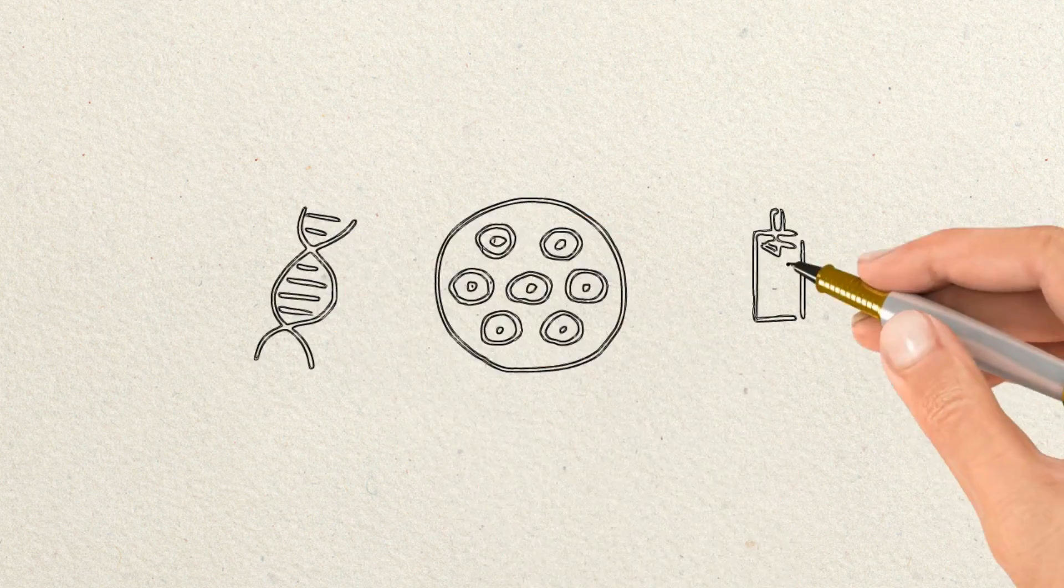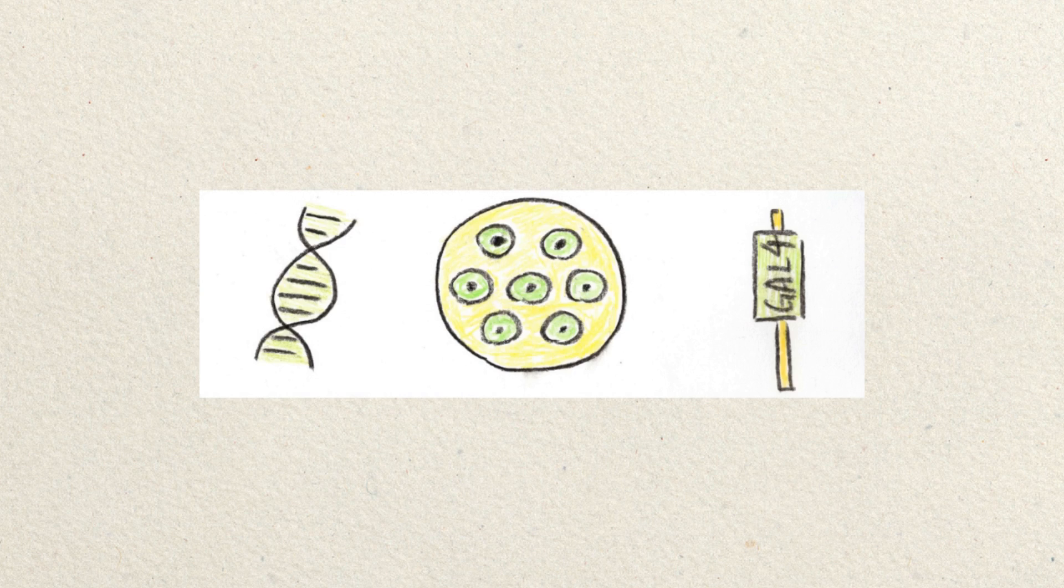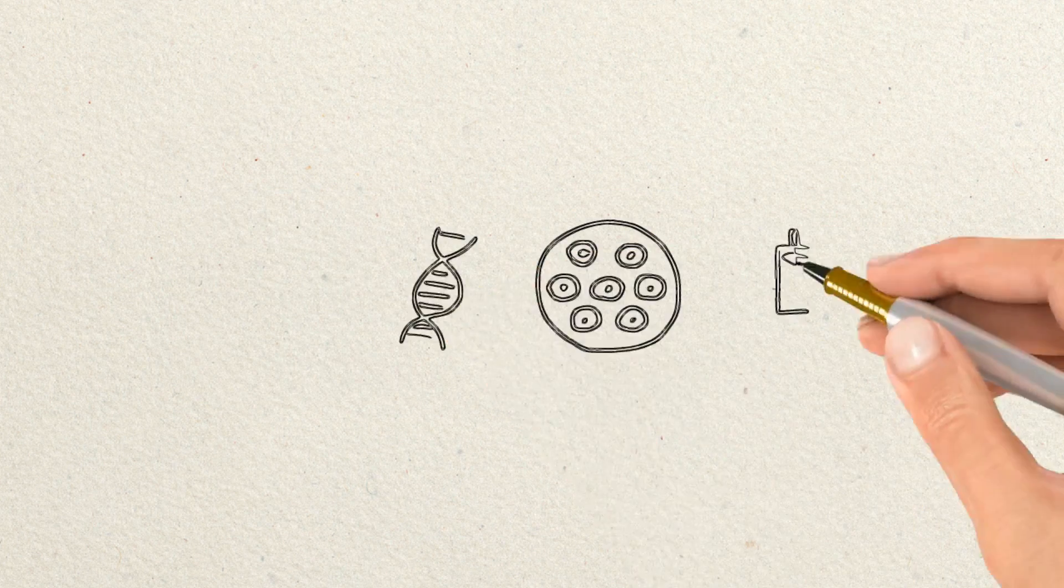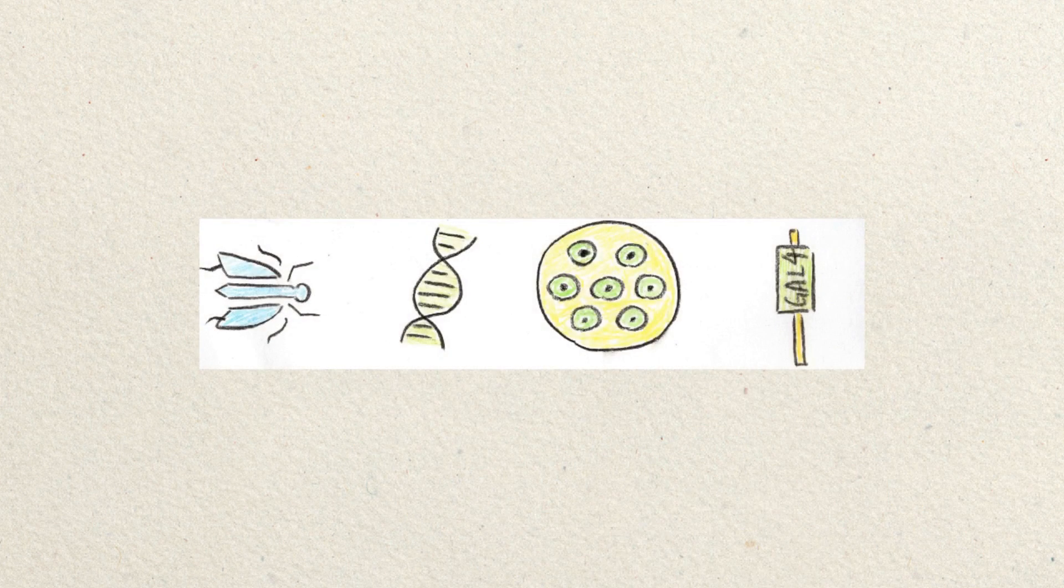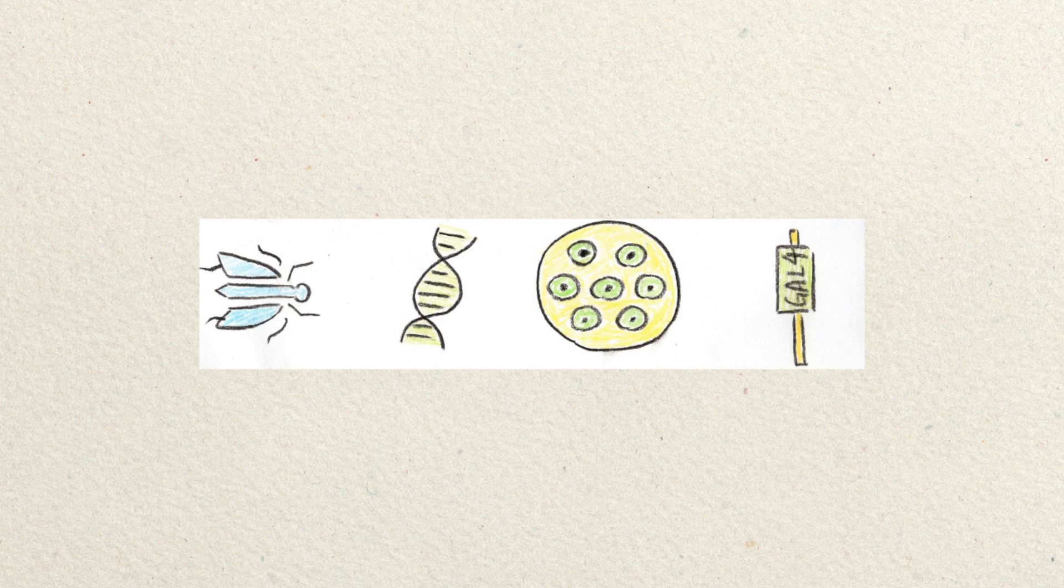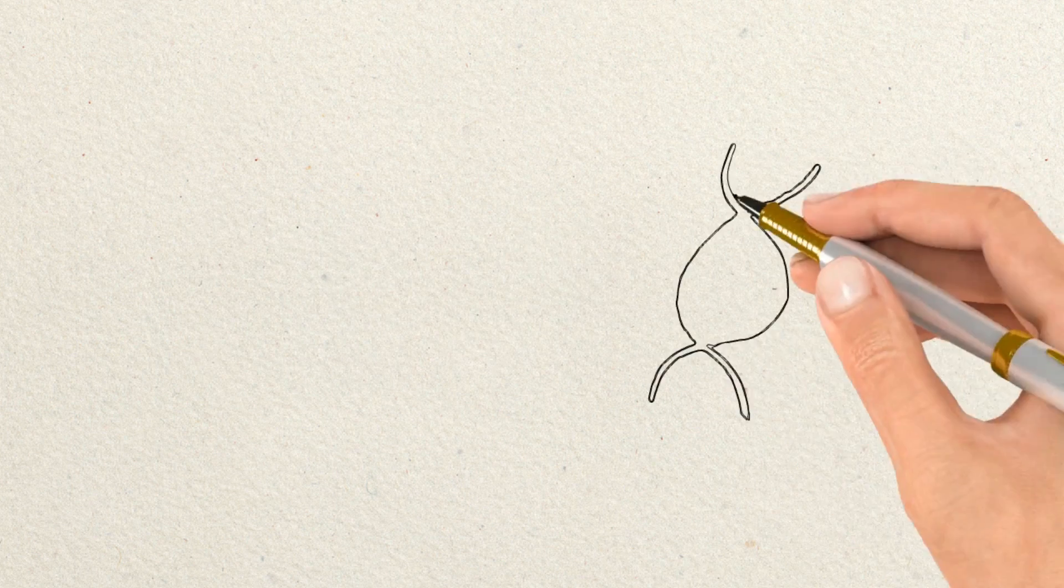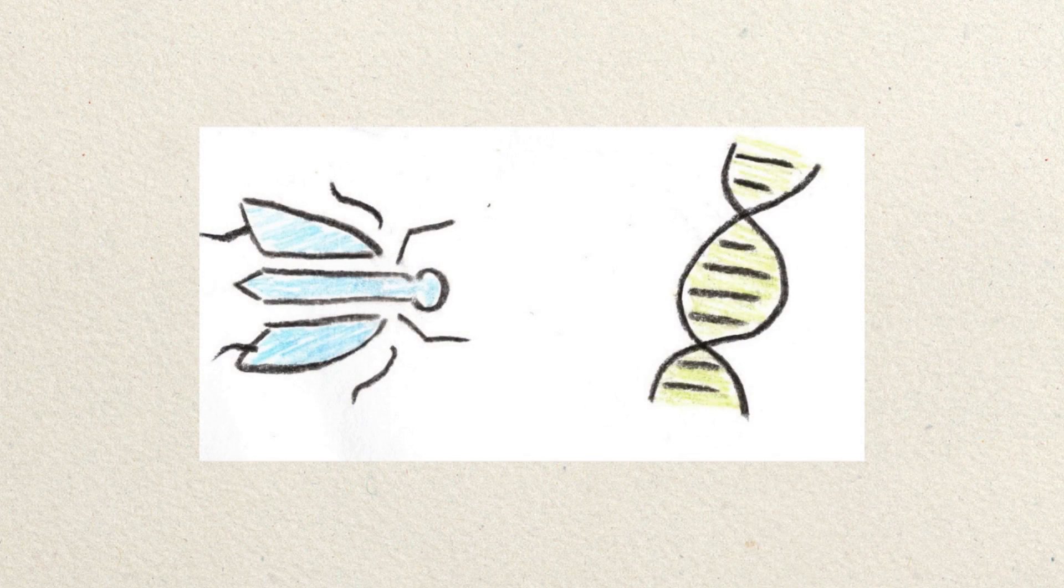Another useful function of yeast in neuroscience is a genetic tool called Gal4-UAS system. The Gal4 protein from yeast can activate gene expressions in fruit flies. By using this tool on fruit flies, researchers are able to generate flies with a mutated gene of interest.